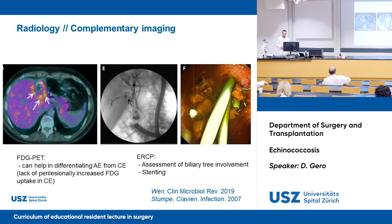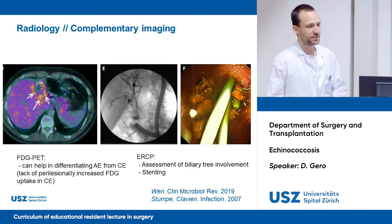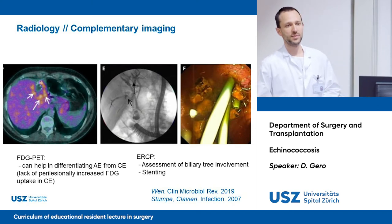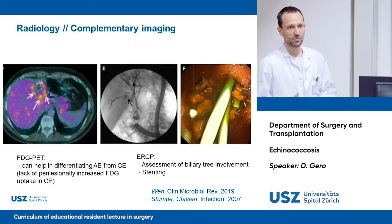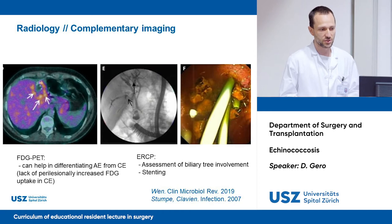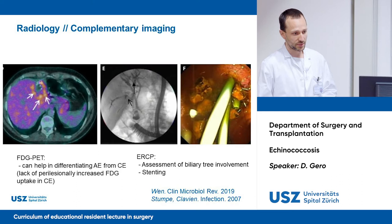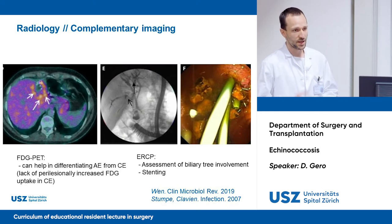We can perform complementary imaging such as FDG PET, which has been reported helpful in differentiating alveolar from cystic echinococcosis because there is a lack of perilesional increased FDG uptake in cystic echinococcosis. We can also proceed to ERCP to identify biliary tree involvement and to place stents if necessary.